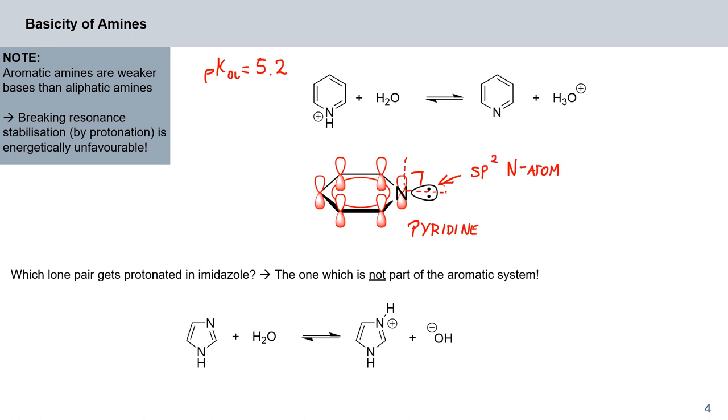What about imidazole? Here we have a choice between two nitrogens. Which lone pair is protonated? Well, the one which is not part of the aromatic system. We have two nitrogen lone pairs, one over here and one over here.